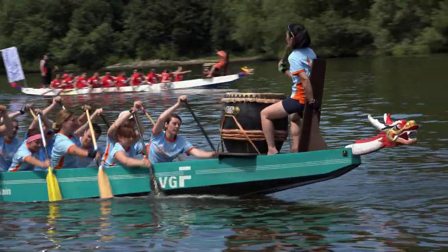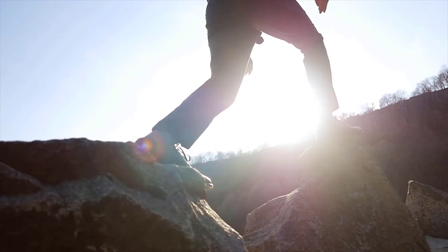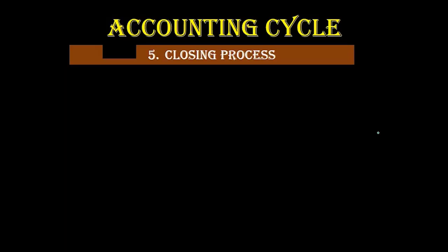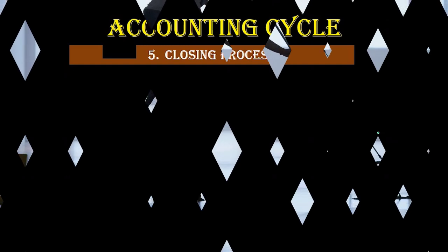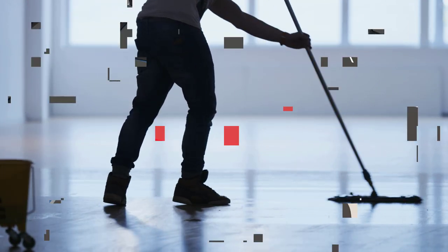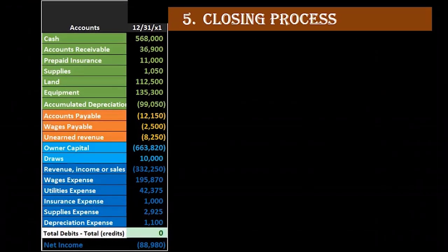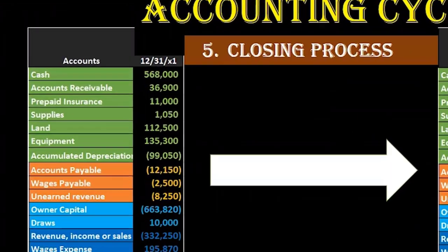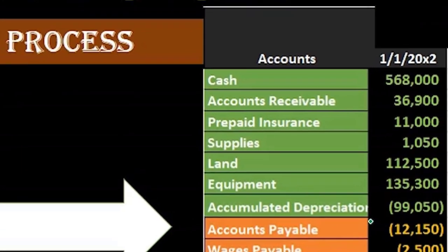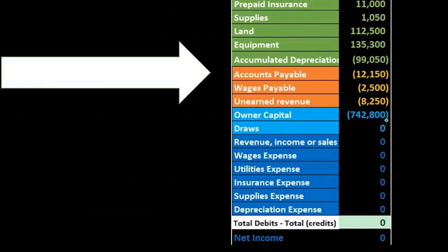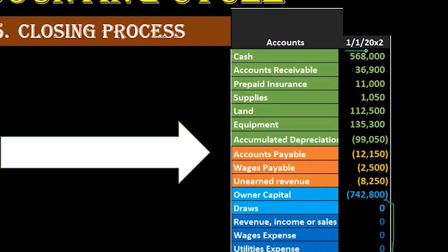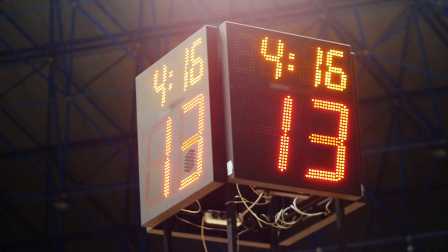The financial statements are the main event, but they're not the last step. After the financial statements, we do the closing process — kind of like the Super Bowl being the main event, and then the closing process is cleaning up the stadium so we can start over again. We take the adjusted trial balance and close out the temporary accounts — the scoreboard accounts: revenue accounts, income statement accounts, and draws accounts. Those are zeroed out at the end. As of the first day of the next month, we want them at zero, just like a scoreboard at the start of a new game, so we can start counting up again from that point forward.